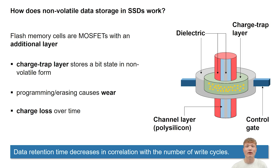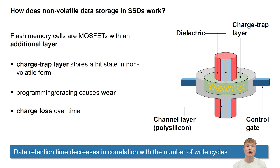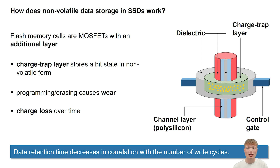First, let's look at how non-volatile data storage in SSDs actually works. Flash memory cells are effectively MOSFET transistors with an additional layer. This so-called charge trap layer is insulated between oxide and can therefore store charge, and with this charge also a bit state non-volatilely. To read out the bit state, a fixed voltage is applied at the control gate. If the charge trap layer is charged, it counteracts the current flow, corresponding to bit state 0. If there is no charge in the charge trap layer, current can flow through the transistor, which is when bit state 1 is read out.